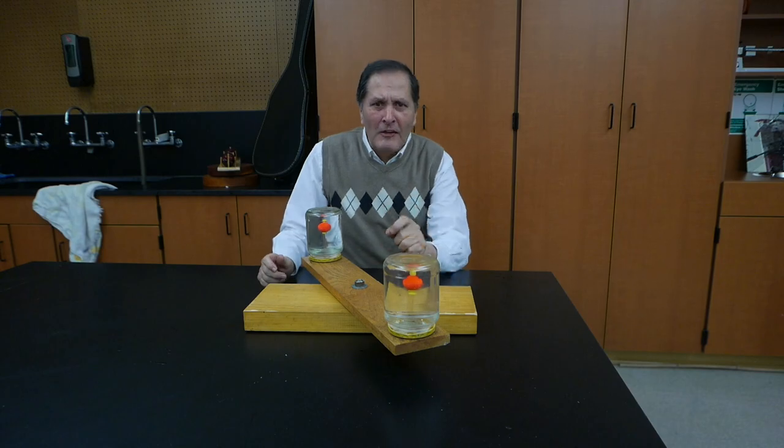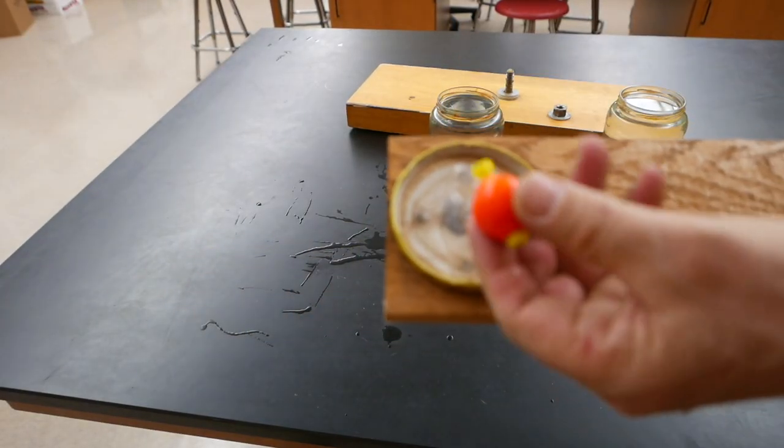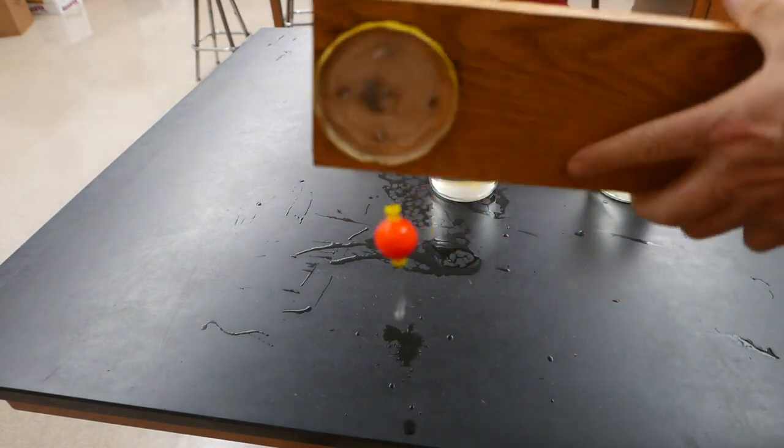Now this is an easy build, so let's take a quick look. The jar lids are attached with screws and then covered with glue. The bobbers on each end are held in place by fishing line.